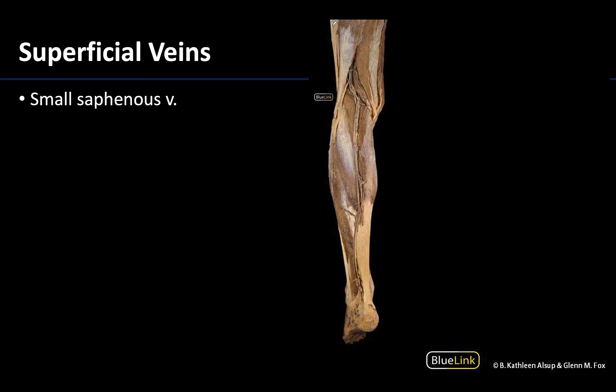The other major superficial vein of the lower limb is the small saphenous vein, sometimes referred to as the short or lesser saphenous vein. As its name suggests, it is not as long as the great saphenous vein and will only really be visible in the posterior leg region.